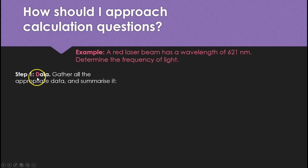Step one is data. Gather all of the appropriate data together and summarize it. Now, I would do this in an exam or when doing an exercise. I'd write down the symbols. Lambda is the wavelength, that's what's given here. C is the speed of light. This data would be given on the data sheet or at the beginning of the exam paper, not with the question. And I'm after the frequency. So I've written down the three symbols I'm after and the data that I know.